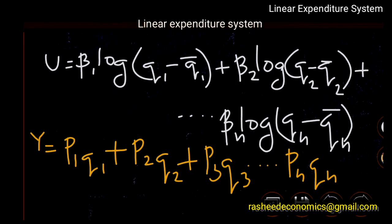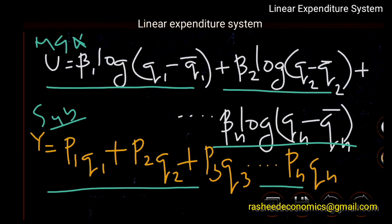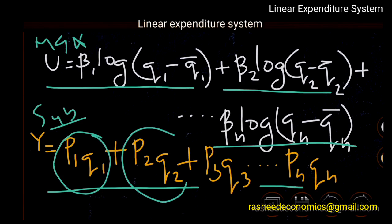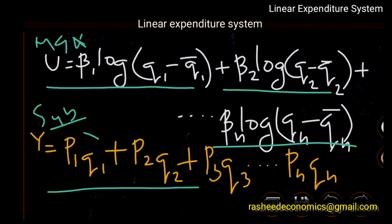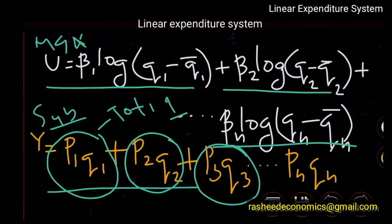We maximize this utility function subject to this constraint. The constraint is that total income is to be allotted for the extra quantities purchased from group 1, plus group 2, plus group 3. The term p1*q1 shows total expenditure for group 1, similarly for group 2, group 3, up to group n, which equals the total income of the consumer.